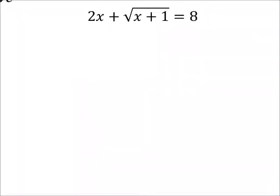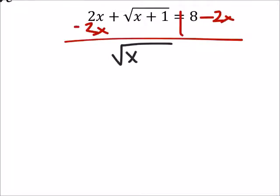For this one, since we got that 2x plus the radical, we need to get rid of it. So what I'm going to do first is subtract 2x from both sides of the equation. And I'm still left with my radical, x plus 1. That's what we wanted.